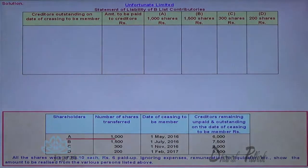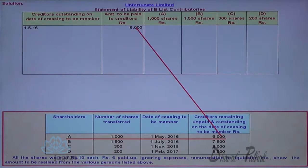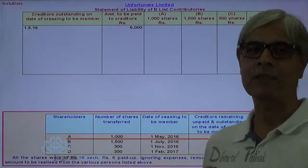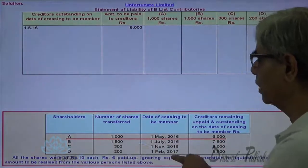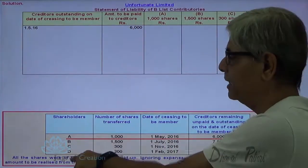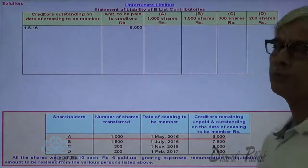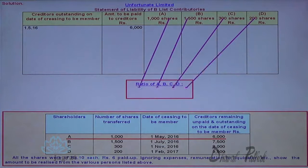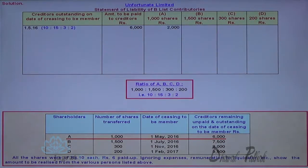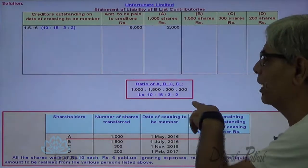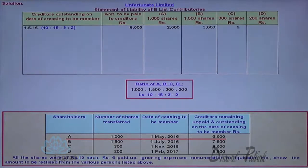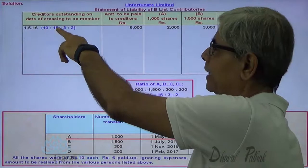Now let us start. 6,000 is the liability when A transferred the shares on 1st of May 2016. At that time, B was also a member since he transferred shares on 1st of July; C and D were also members. So 6,000 is a liability in which A, B, C, D all four have to contribute in the proportion of 1,000 : 1,500 : 300 : 200, simplified to 10 : 15 : 3 : 2. So 6,000 distributed in this ratio — 6,000 × 10/30, 6,000 × 15/30, 6,000 × 3/30, 6,000 × 2/30. This is how the distribution takes place.